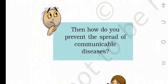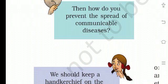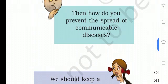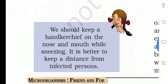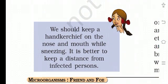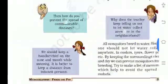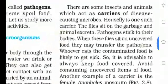How do you prevent the spread of communicable disease? Tab communicable disease ko kaise prevent kar sakte hain? We should keep a handkerchief on the nose and mouth while sneezing. Jab hum chheenk rahe ho toh hamare naak aur munh par handkerchief rakhna chahiye. It is better to keep a distance from an infected person — ye better option hai.